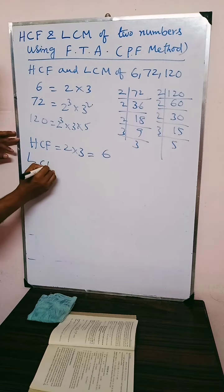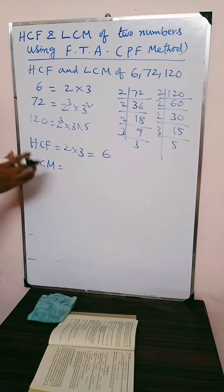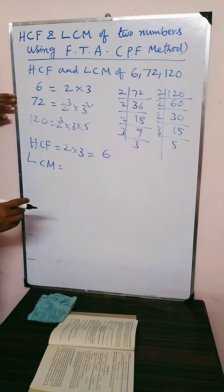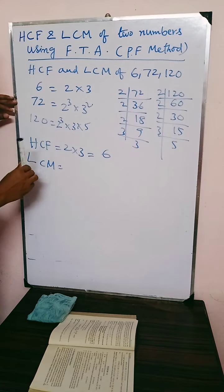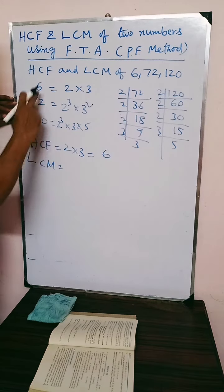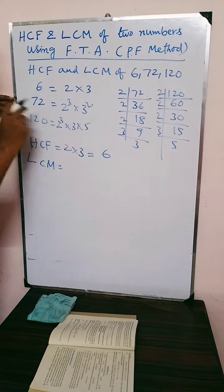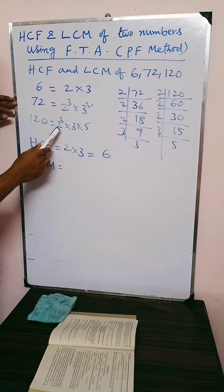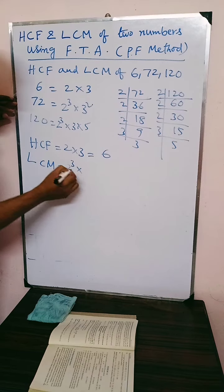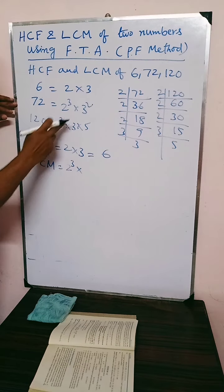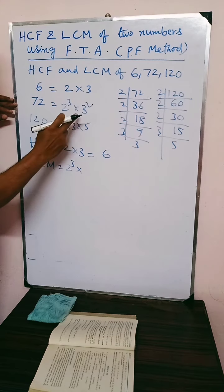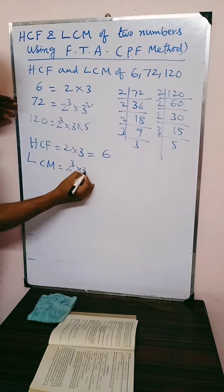Now for LCM, we take LCM as the product of all the factors with highest power. All the prime factors involved in the 3 numbers with highest powers. Here 2 is there, here also 2 is there, here also 2 is there. But highest power of 2 is 3. So 2 cubed we take for the prime factor 2. 3 is the next prime factor involved. So 3 squared is the highest power. So 3 squared we take.